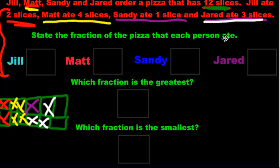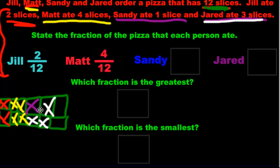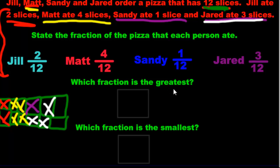State the fraction of the pizza each person ate. Jill ate two — that's our numerator — and the denominator is 12 because we have 12 altogether, so Jill ate two over 12. Matt ate four out of 12. Sandy ate one out of 12. Jared ate three out of 12. The denominator is always 12 — it doesn't change because that's how many we had to start with. Which fraction is greatest? Matt wins with four out of 12. Which is smallest? Sandy with one out of 12 — less than two, less than three, less than four.